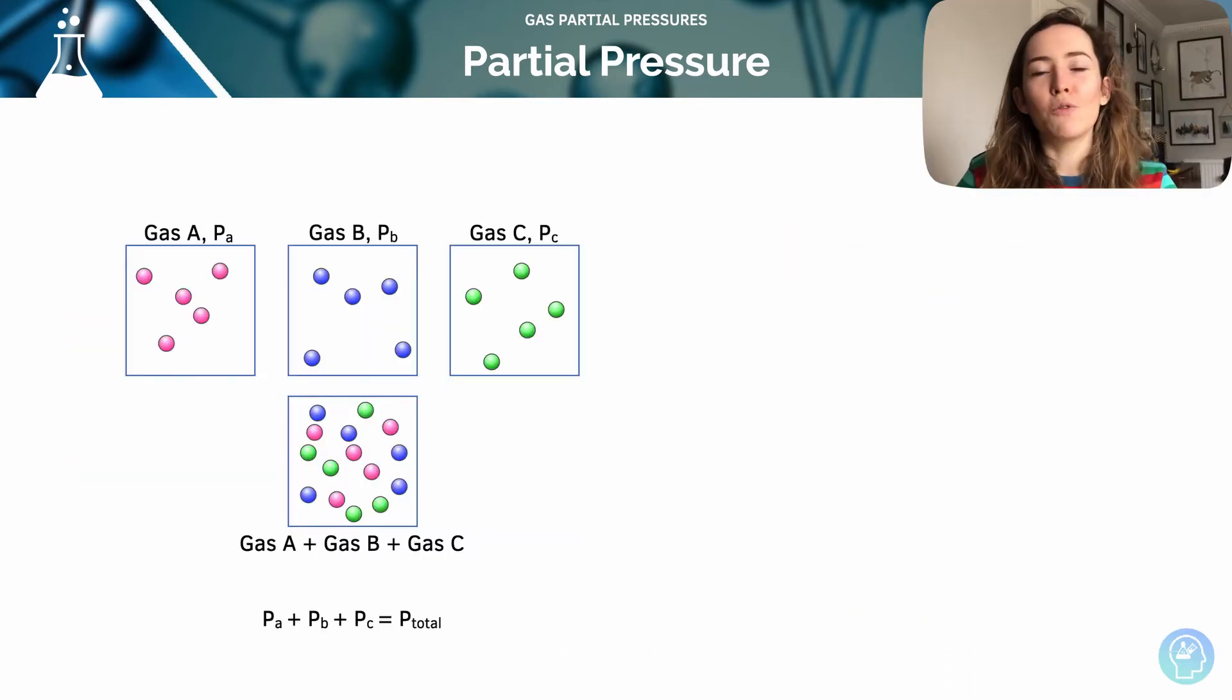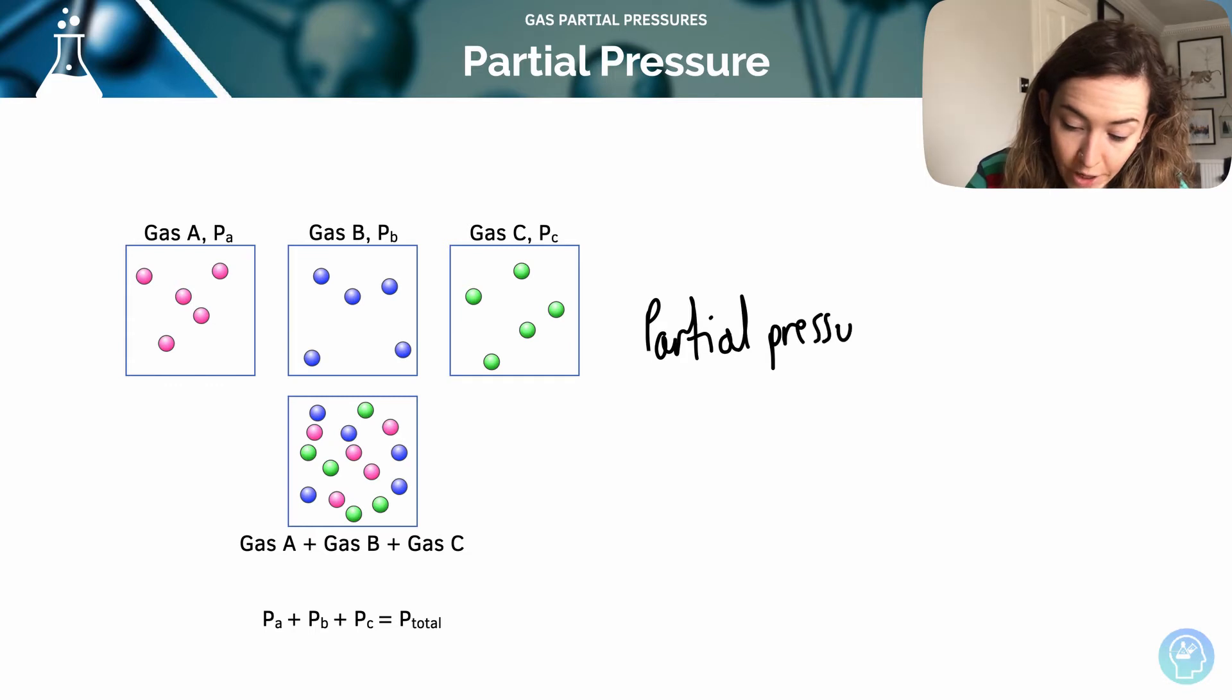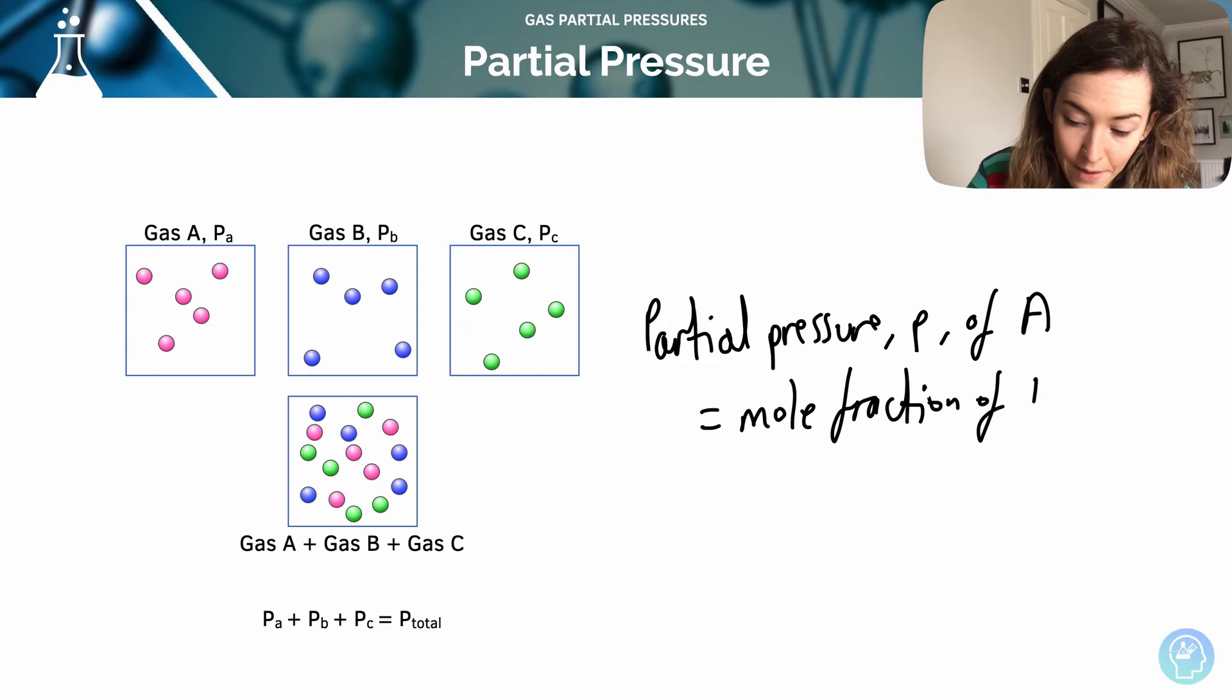How do we work out those partial pressures then? Where do my values for PA, PB and PC come from? Well we use the equation, so partial pressure or P, for example of gas A, that is equal to the mole fraction of A, now I'll show you what that is in a minute, times total pressure.